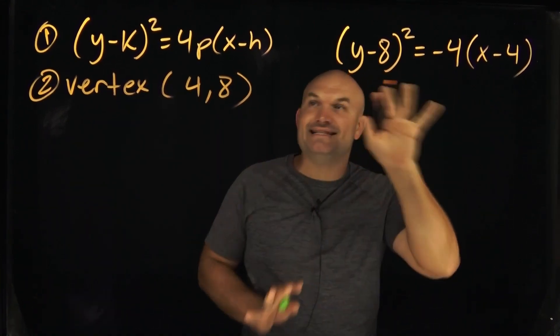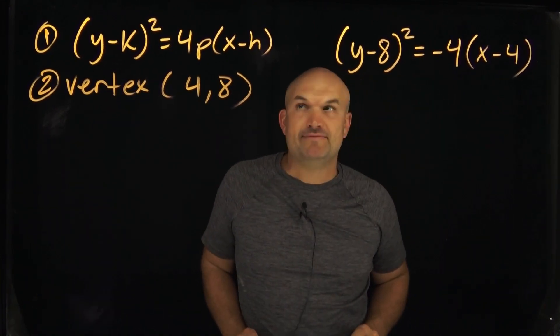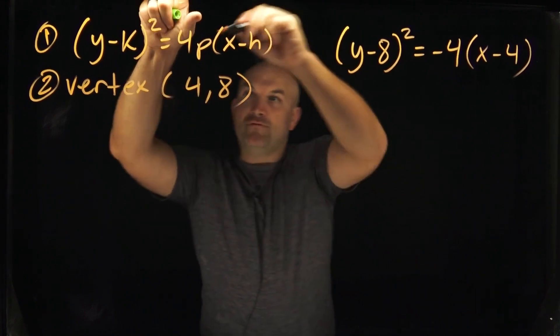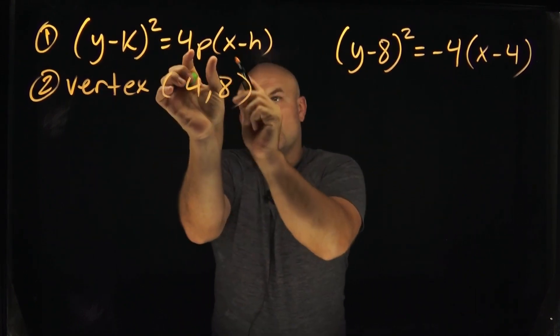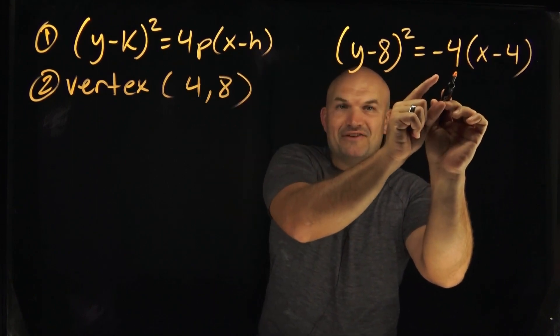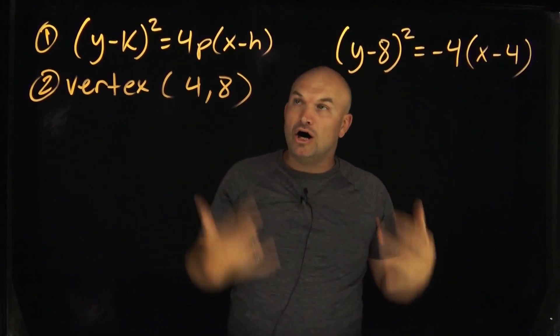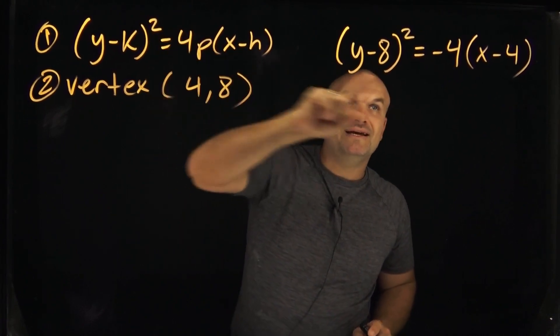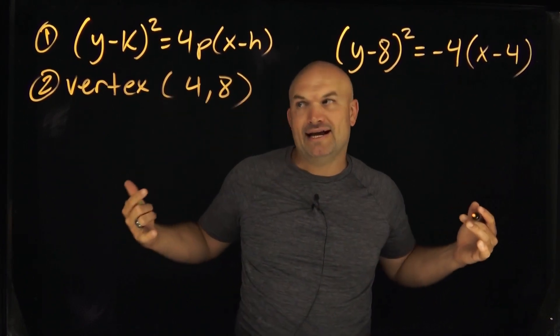So now what we can do is go ahead and identify what my value of p is going to be. So recognize here I have 4p. That is in front of the coefficient of x minus h. Well in this case, what is my 4p? My 4p is equal to negative 4. So guess what? If I want to be able to find p, all I'm still going to do is set this equation 4p is equal to negative 4 and then go ahead and solve.